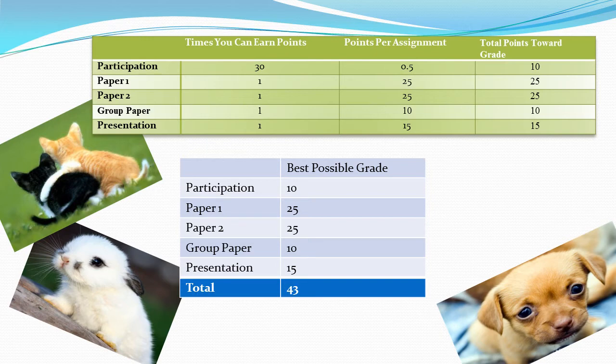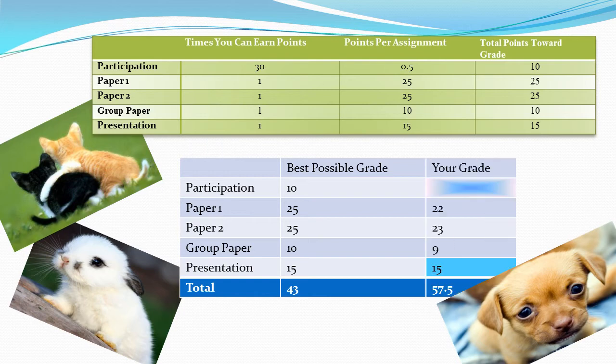In the Excel file, you list all the different assignments and the best possible grade you could get on each of them. Then you list your current grade and give yourself 100% on anything still left. The participation grade is a special case — I'll explain in a moment. Right now, the only things remaining are your participation grades and your presentation. You've given yourself 100% on that presentation — 15 points. Now let's figure out your best possible participation grade.